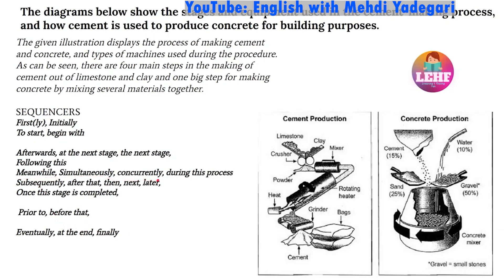We also have 'meanwhile,' 'simultaneously,' 'concurrently,' and 'during this process.' When we use these sequencers, we're talking about an action happening at the same stage or the same time as another action — for example, while you're heating cement, something else is also happening in the same sequence. You use words like 'meanwhile' or 'simultaneously' to indicate something else is being done at the same time. These sequencers are enough to get you by.